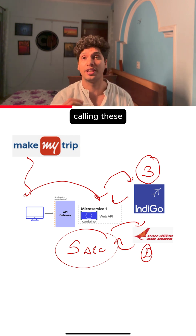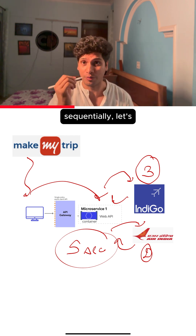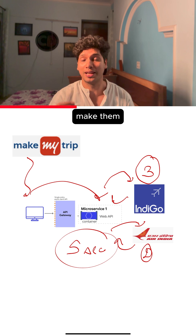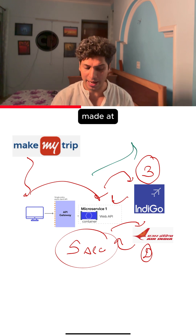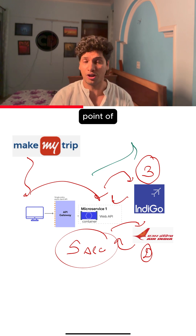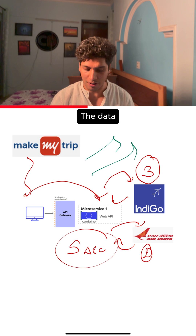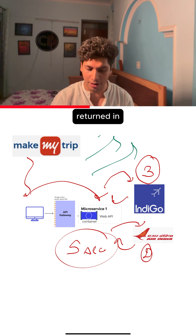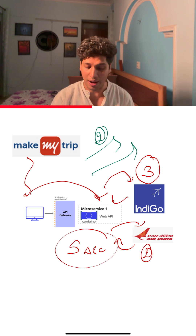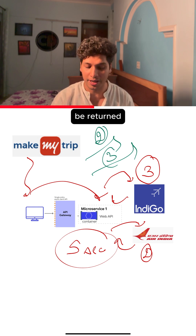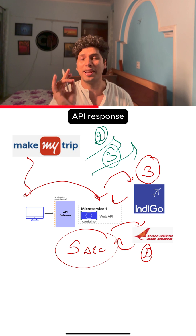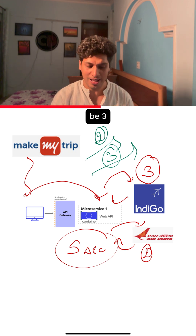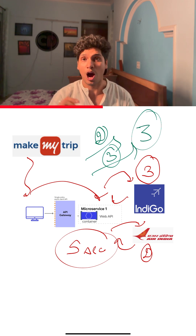Instead of calling these two APIs sequentially, let's make them parallel. The first call and the second call will be made at the same point in time. The data from AirIndia will be returned in 2 seconds, while from Indigo it will be returned in 3 seconds. Overall, the API response time would be 3 seconds.